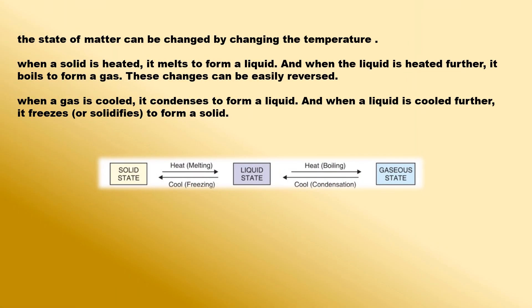If we cool steam or water vapor by lowering its temperature, it is converted into liquid water. In this case, a gas — steam — changes into a liquid, so a change of state has taken place. The process of changing a gas or vapor to a liquid by cooling is called condensation.